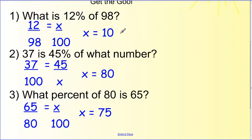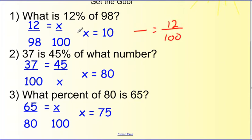Before we get down there, let's do our Get the Goofs. Number one: what is 12% of 98? Well, this thing is way wrong, because when we set up our proportion, we should have 100 here. This is our percent, so that's wrong. Of 98, so that's correct, and that's our variable. So they basically have these two things backwards, which is enough to completely mess up the problem.